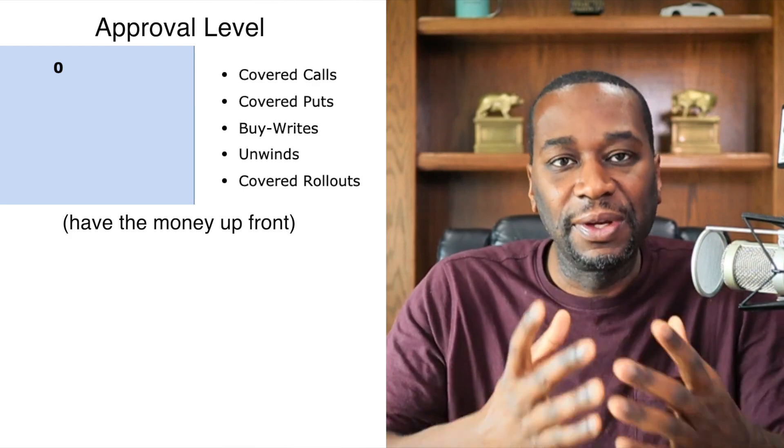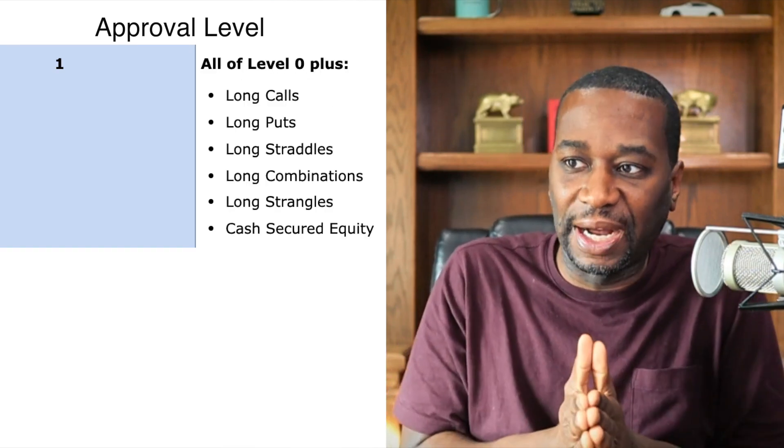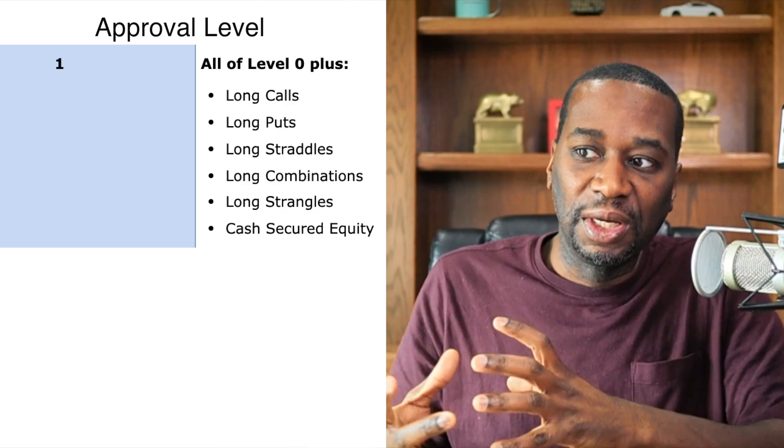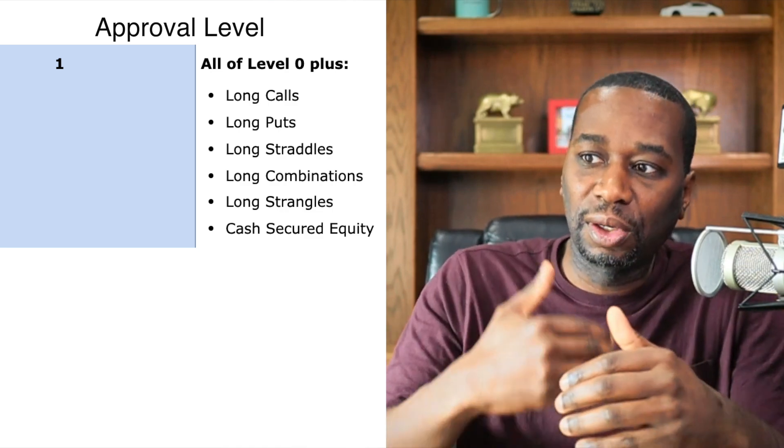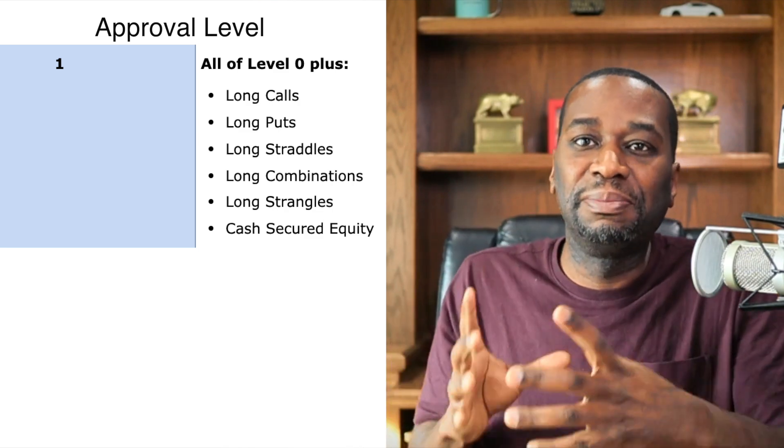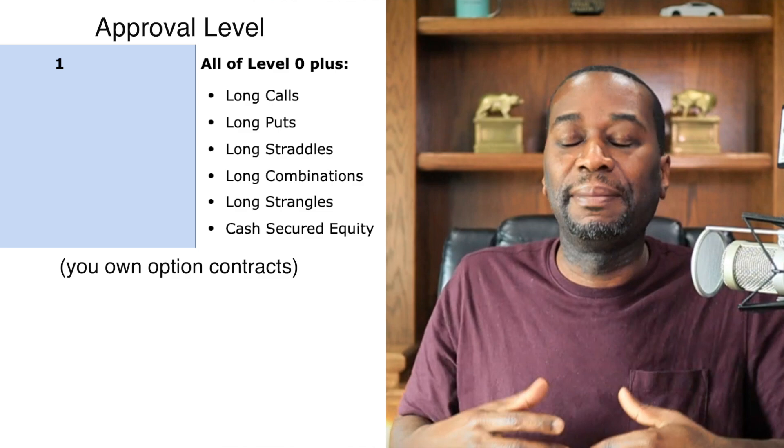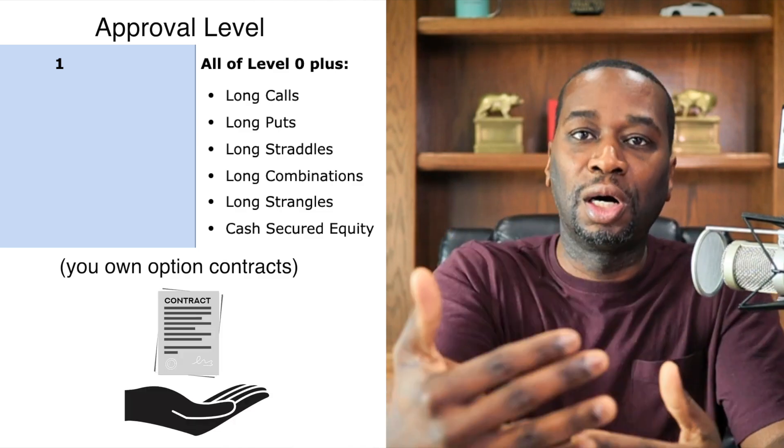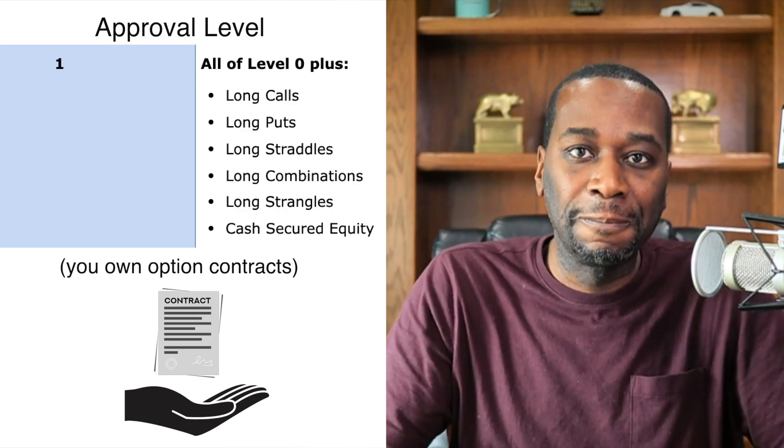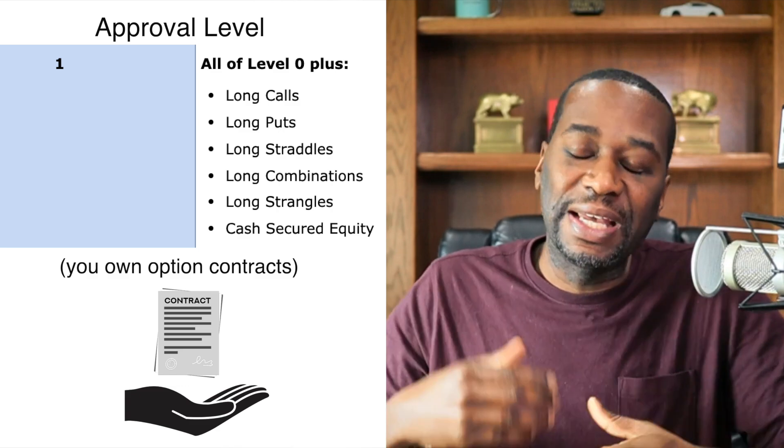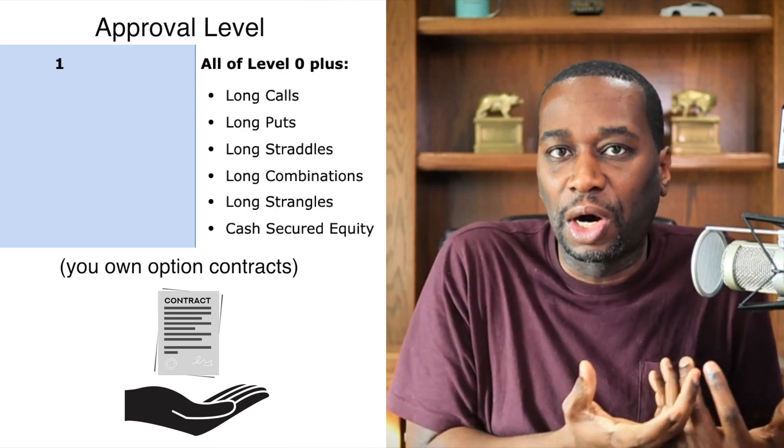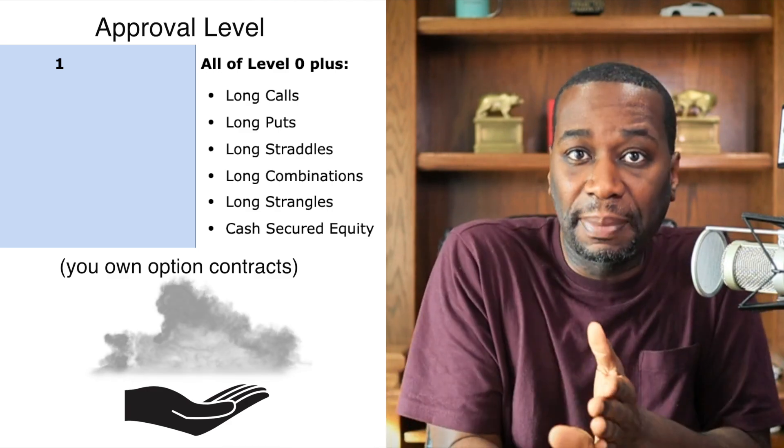Now if we look at level two of options, or should I say level one because they call that level zero. So when we look at level one, level one is being able to go long calls or long puts. Now this confuses most people. Going long just means you own something, so that means you bought some calls, so you are long some call options, or you bought some put options, you're long some puts. How this differs from level zero is that by buying the calls or buying the puts, you don't necessarily have to own any stock. You can just say 'I just want to straight buy a call option, straight buy a put option,' and you'd be allowed to do that.